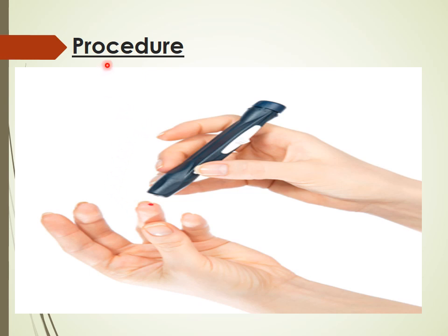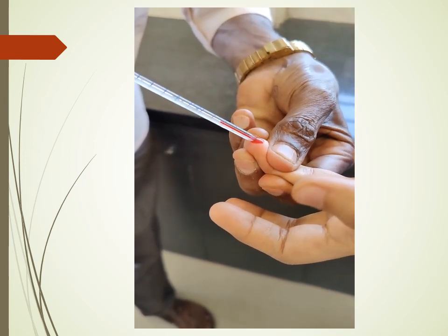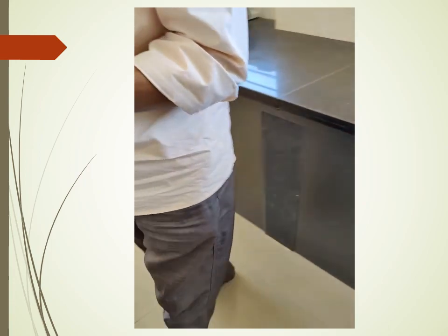For the procedure: first, clean and dry the WBC pipette, the Neubauer chamber, and the cover slip. Then prick the fingertip, wipe out the first drop of blood, and suck the oozing blood using the WBC pipette up to the 0.5 mark.